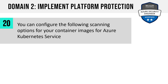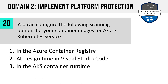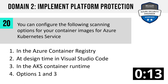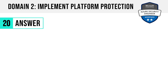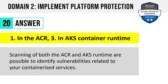Number 20. You can enforce the following scanning options for your container images for Azure Kubernetes Service: in the Azure Container Registry; at design time in Visual Studio Code; in the AKS container runtime; or options one and three? The answer is one and three: in the Azure Container Registry and in the AKS container runtime. Scanning in both of these areas is an option for our containerized services, and for best security you really should be scanning in both places.